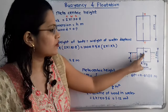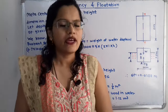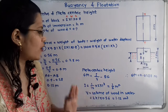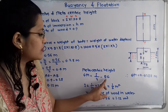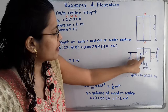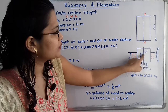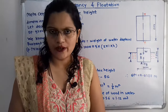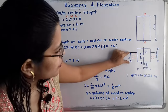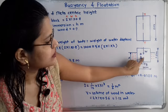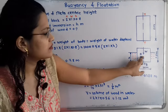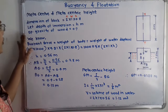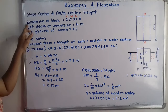The metacentric height GM is the distance from the center of gravity G up to the metacenter M. The formula is: GM = I/V − BG. We first need to find BG — the distance between the center of buoyancy B and the center of gravity G. The center of buoyancy B is located at H/2 from the bottom.